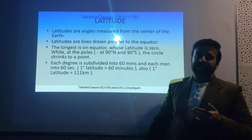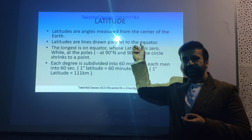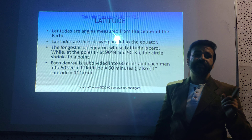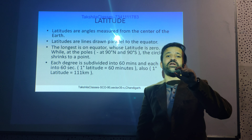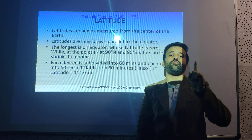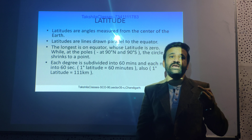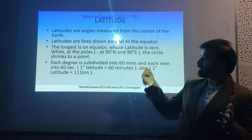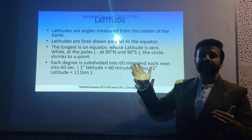Latitudes are basically angles measured from the center — the angle with the horizontal plane gives you the latitude in degrees. These are also called parallels. The perpendicular distance between two latitudes is constant: that is 111 kilometers per one degree of latitude. Remember this — it can be a question in AFCAT or any paper. The longest latitude is the equator.